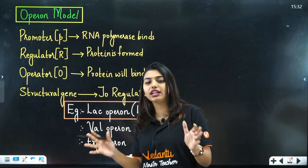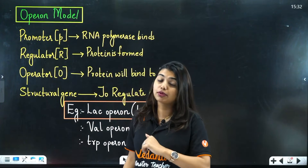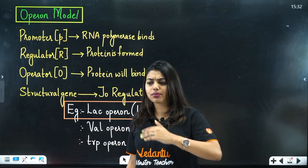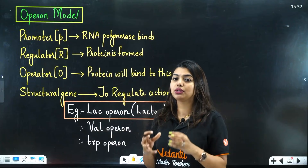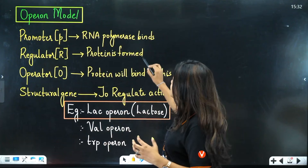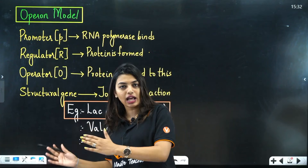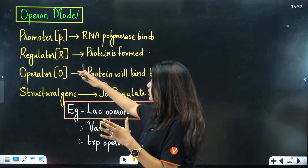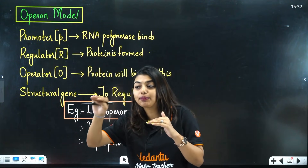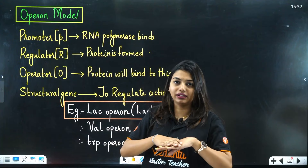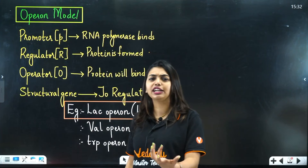When learning about lac operon, you need to know about an operon model in general. There is a promoter region where RNA polymerase binds to start transcription. Then there is a regulator — the main controlling element — which forms a protein called the repressor protein. The protein formed by the regulator then goes and binds with the operator.